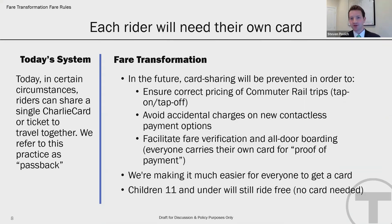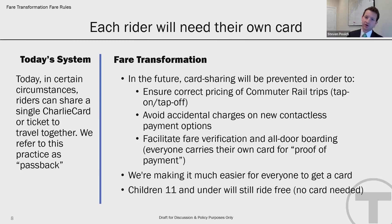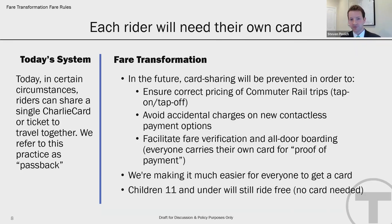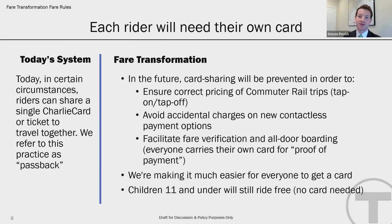The next change is that each rider will need their own card in certain circumstances. Today, riders can share a single Charlie card — something we call passback — where the first person taps, the card is debited by the fare amount, they pass it to a friend or family member, and that can go on for a number of passengers. In the future, card sharing will be prevented for a number of reasons: it ensures correct pricing of commuter rail trips, avoids accidental charges, and ensures everyone can prove they paid when we implement all-door boarding on bus and green line service.